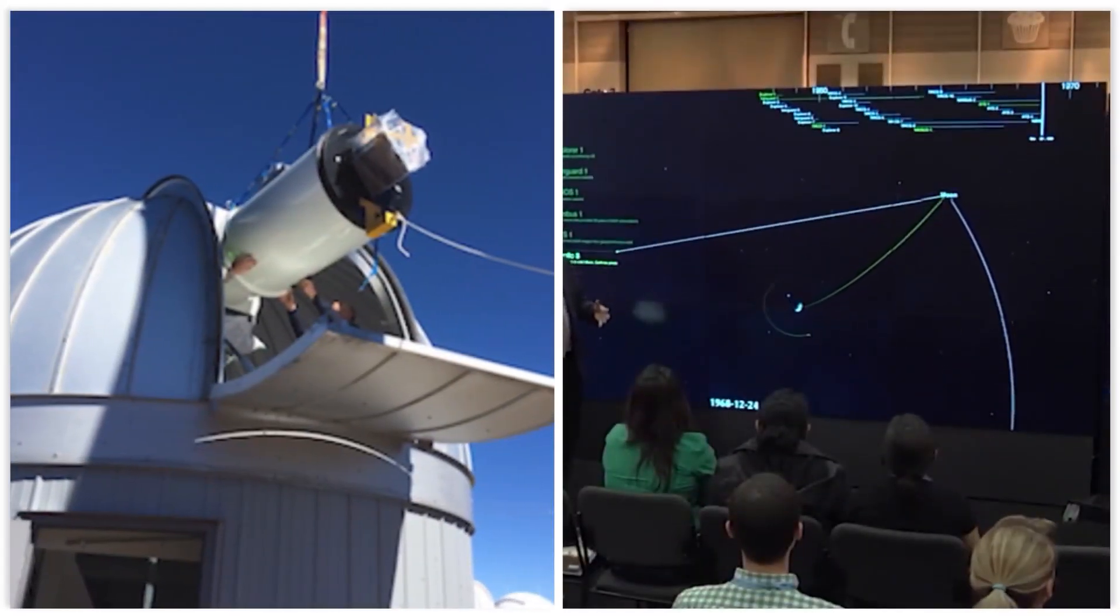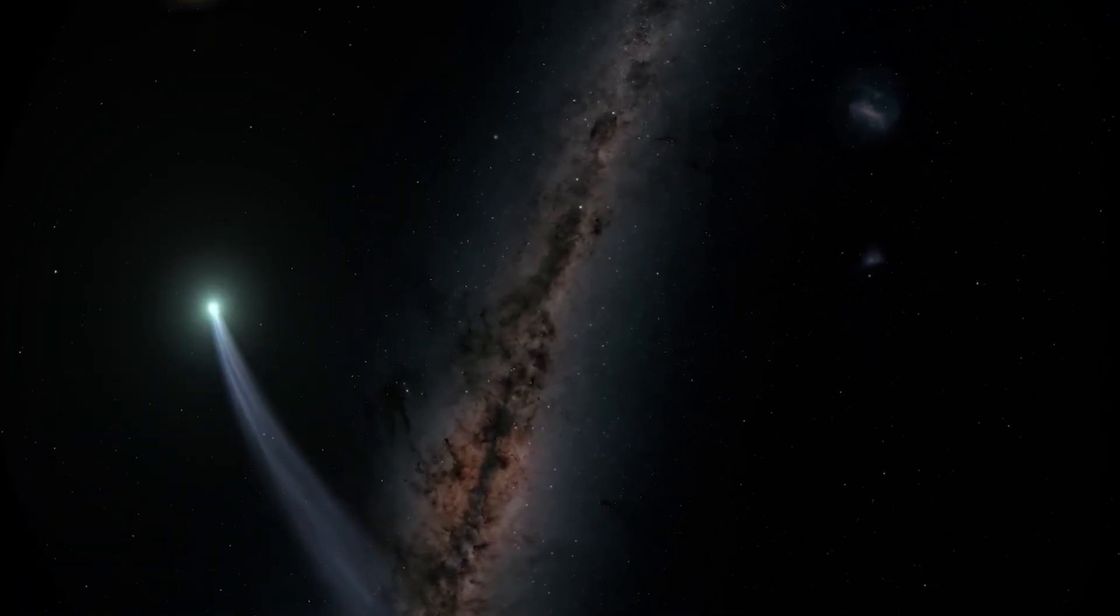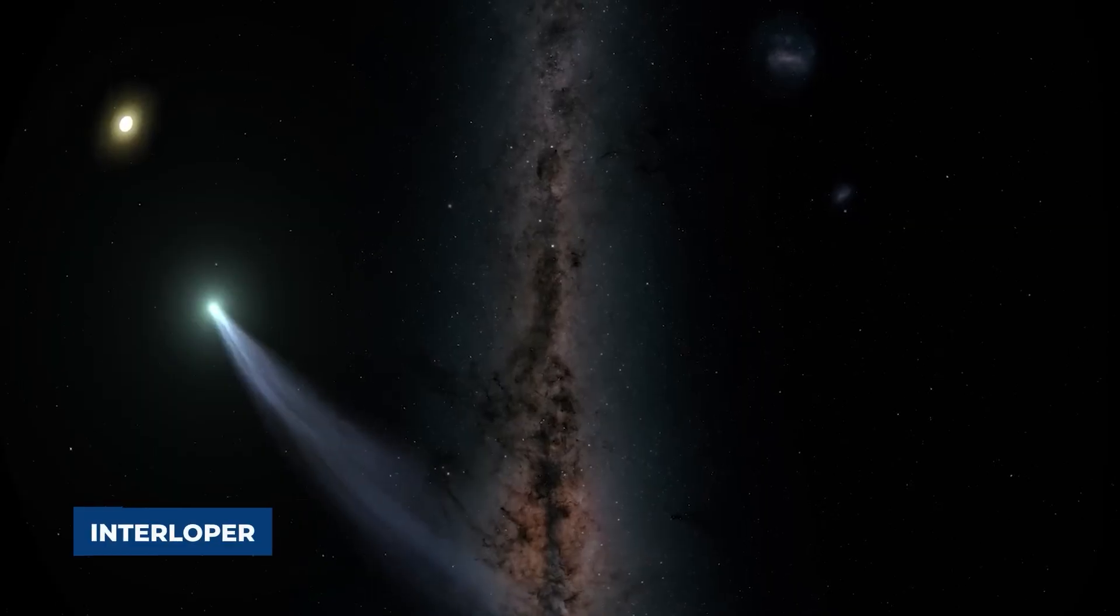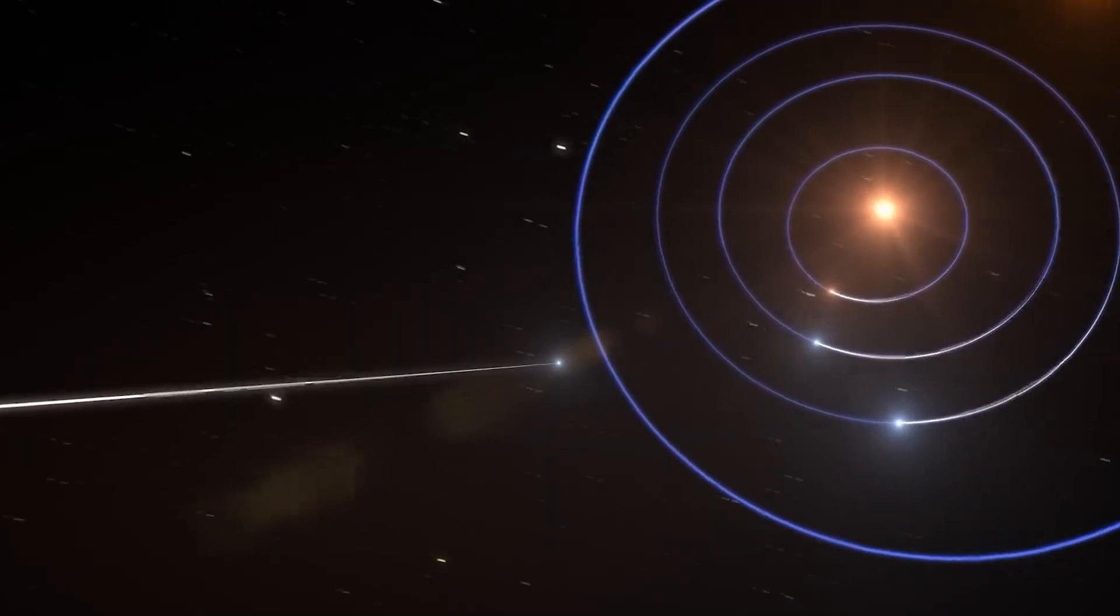Discovered by the Atlas telescopes, its hyperbolic path meant it wasn't just another icy chunk orbiting our sun. This was an interloper, the third confirmed interstellar object to ever grace our solar system.